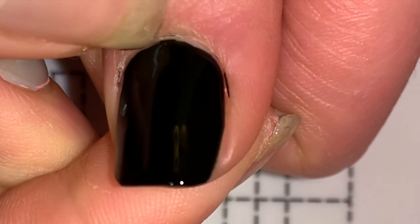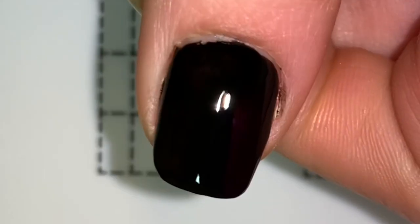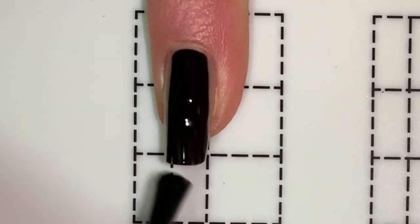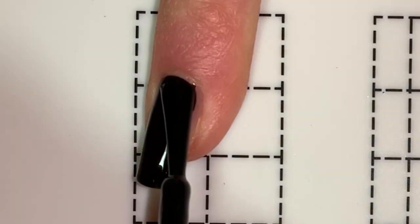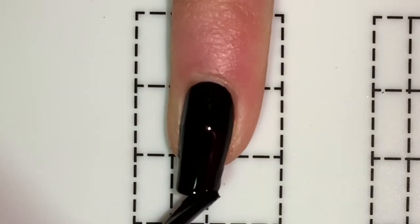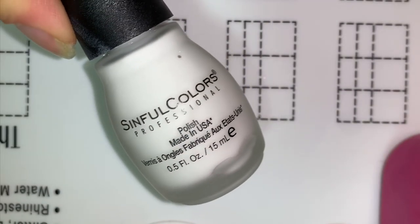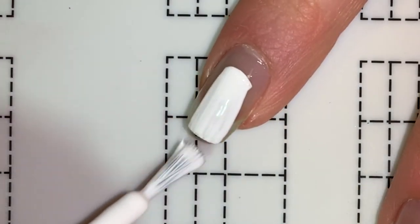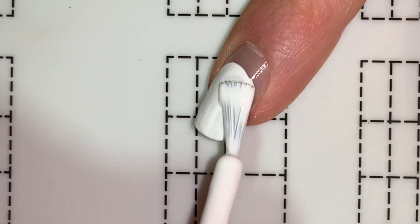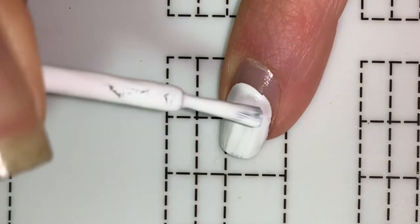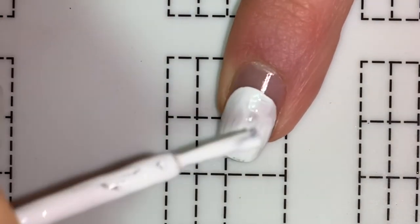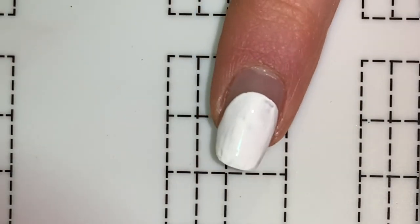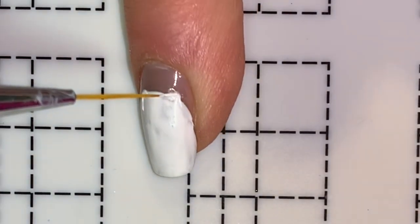Now for the actual design, I'm using white on my index and ring fingernail. I'm also using this detail brush from Born Pretty. For the first bear, I'm starting off with what's essentially just an egg shape. The next thing I did was the ears, which were actually pretty hard to do on camera.